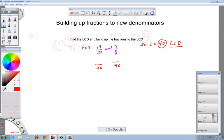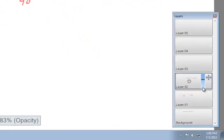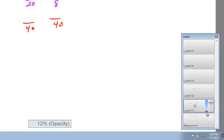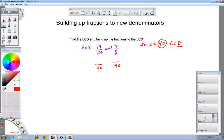Then you basically just do this process again. Put this back up there. So you say 20 times what is 40? Of course 20 times 2 is 40. So 19 times 2 is 38. This one, 8 times 5 is 40. So 7 times 5 is 35.